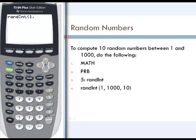We want to generate 10 numbers, so our last entry will be 10, close parenthesis, and enter. Then our calculator gives us 10 random numbers.